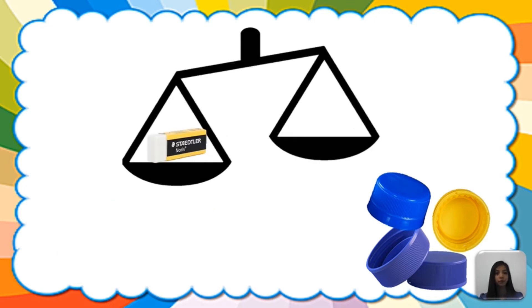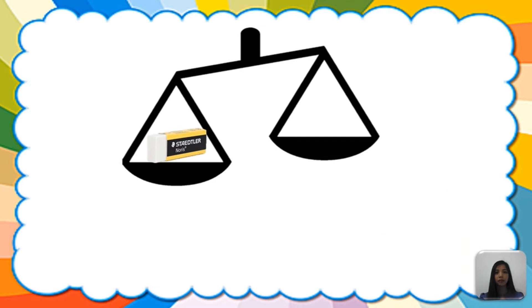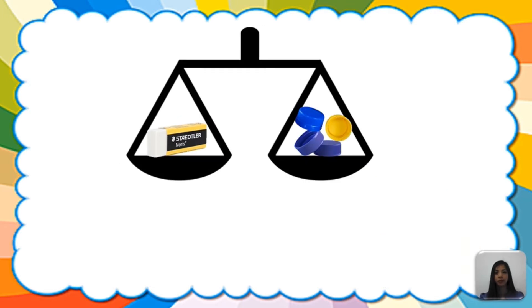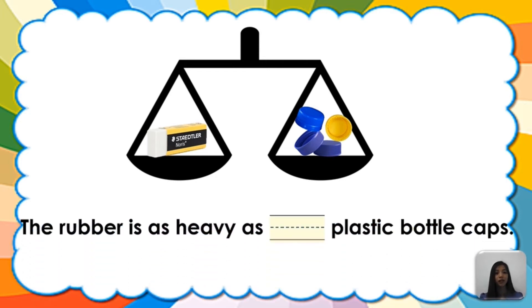So let's put the rubber. Next, the four plastic bottle cups. Oh, those objects have an equal mass. Therefore, the rubber is as heavy as four plastic bottle cups.